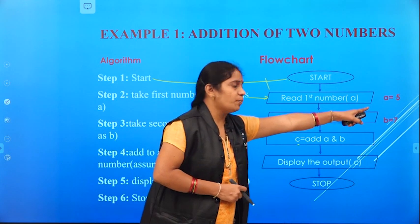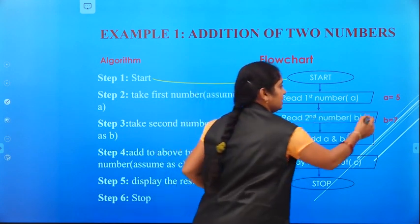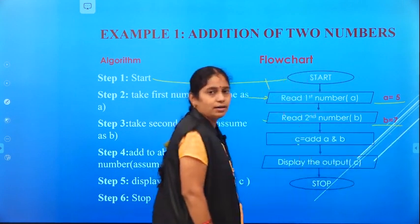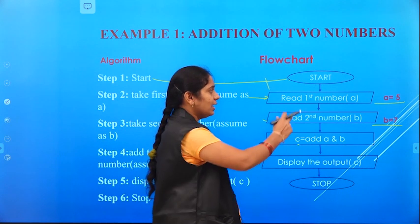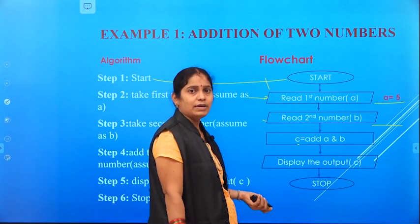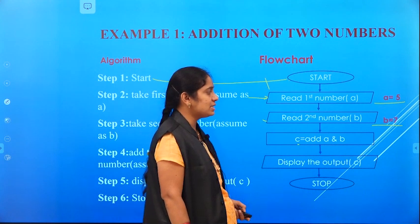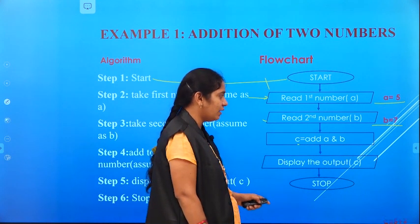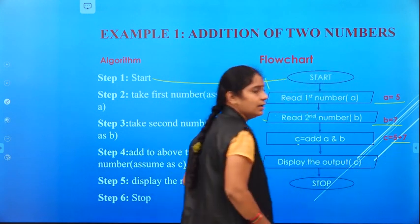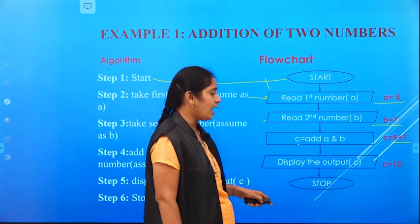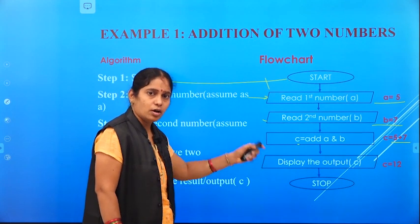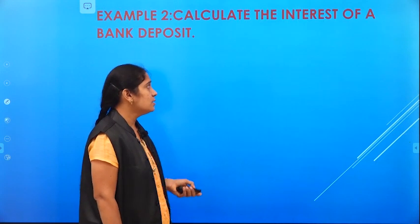Taking an example: assume A as 5 and B as 7. We started, read A as 5, read B as 7, moved to the next step C = 5 + 7 = 12, printed C as 12, and then stopped. That is the sequential order being followed.